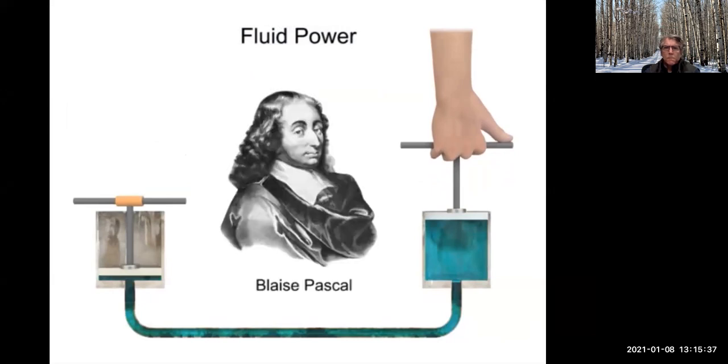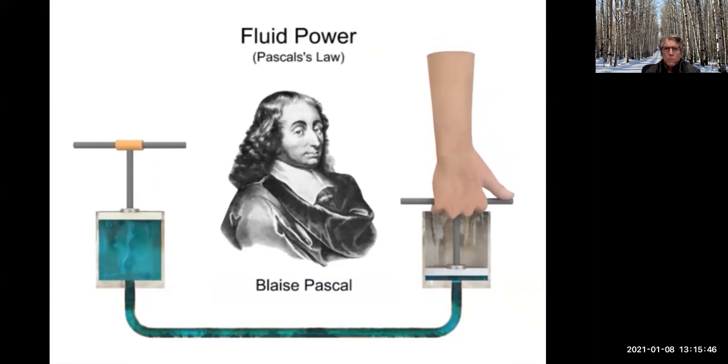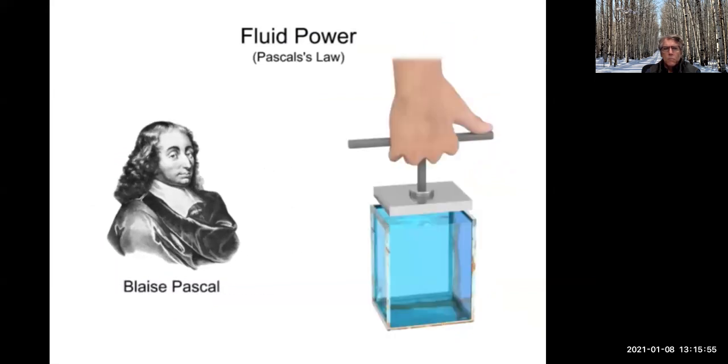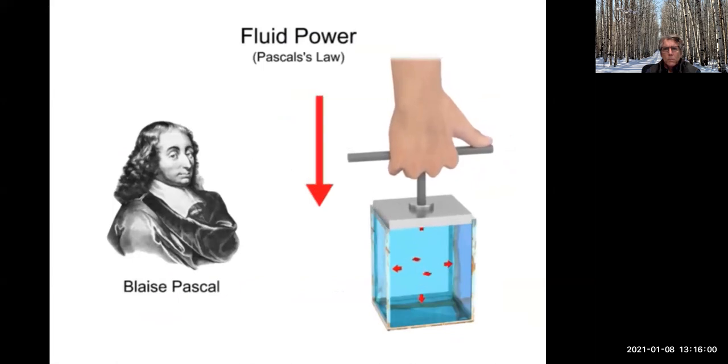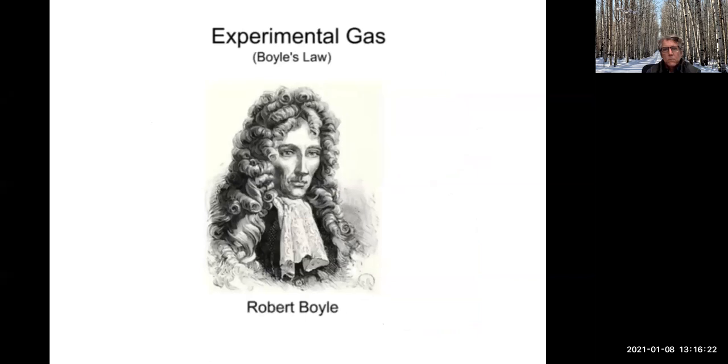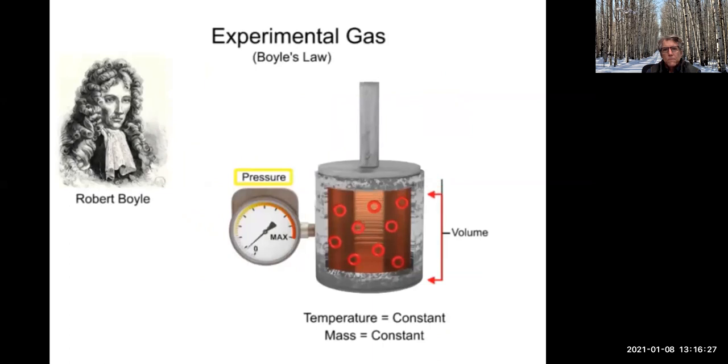Pascal determined that a contained pressurized fluid will exert pressure equally in all directions. Pascal's Law states that pressure set up in a confined body of fluid acts equally in all directions and always at right angles to the containing surfaces. Another important property of fluid mechanics was discovered in the late 1600s by Robert Boyle, an Irish physicist. Boyle's Law is an experimental gas law which describes how the pressure of a gas increases as the volume of gas decreases. A modern statement of Boyle's Law is the absolute pressure of a confined body of gas varies inversely as its volume, provided its temperature remains constant.